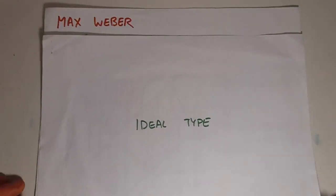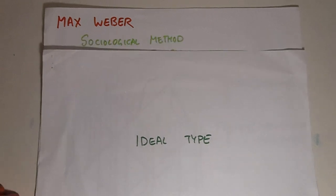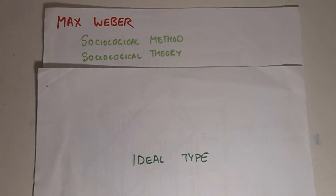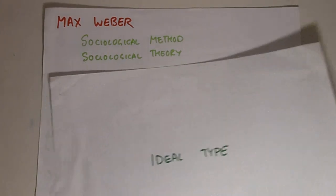Ideal type. The concept of the ideal type comes to us from Max Weber. It's an important part of his views on sociological methods, and it's also important in understanding his contributions to sociological theory. To explain this, let's use an example.